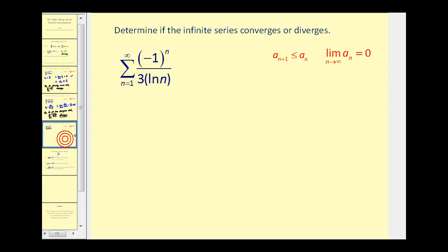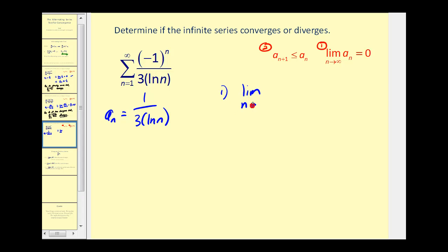Let's take a look at one more. First we'll check to make sure this limit is equal to zero, and then we'll check to see if the non-alternating series is decreasing. So a sub n is going to equal one over three times the natural log of n — remember that a sub n is the non-alternating part of this formula. Now we'll determine the limit as n approaches infinity. Our denominator increases without bound and our numerator is fixed, so this limit equals zero. We've satisfied the first condition for the alternating series test.